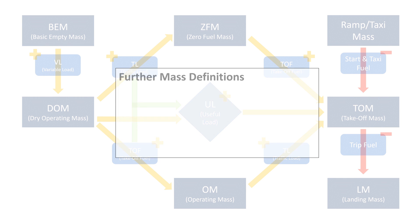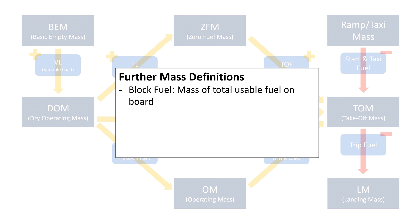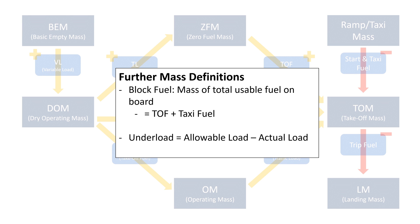Now there are just a few masses left that didn't have a place in the diagram, but that are also somewhat important. The block fuel is the mass of usable fuel on board and is found by combining the takeoff fuel and the taxi fuel. Underload is defined as the difference between the maximum allowable traffic load and the actual one — in other words, how much more payload can be carried. And lastly, all-up mass refers to the sum of the basic empty mass, variable load, traffic load and fuel, so it's really just a synonym for takeoff mass.